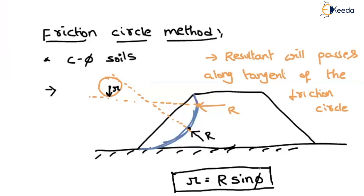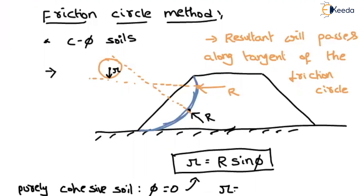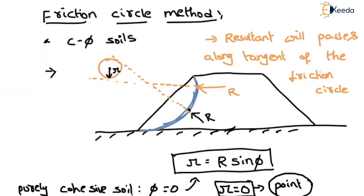If your phi value varies depending upon the soil, your friction circle radius will also vary. For purely cohesive soil, the phi value is equal to zero, so if you substitute into the formula the friction circle radius will be equal to zero — it becomes like a point. This is just like the phi-equal-to-zero analysis in stability of slopes, where the entire soil mass rotates with respect to some point of rotation.